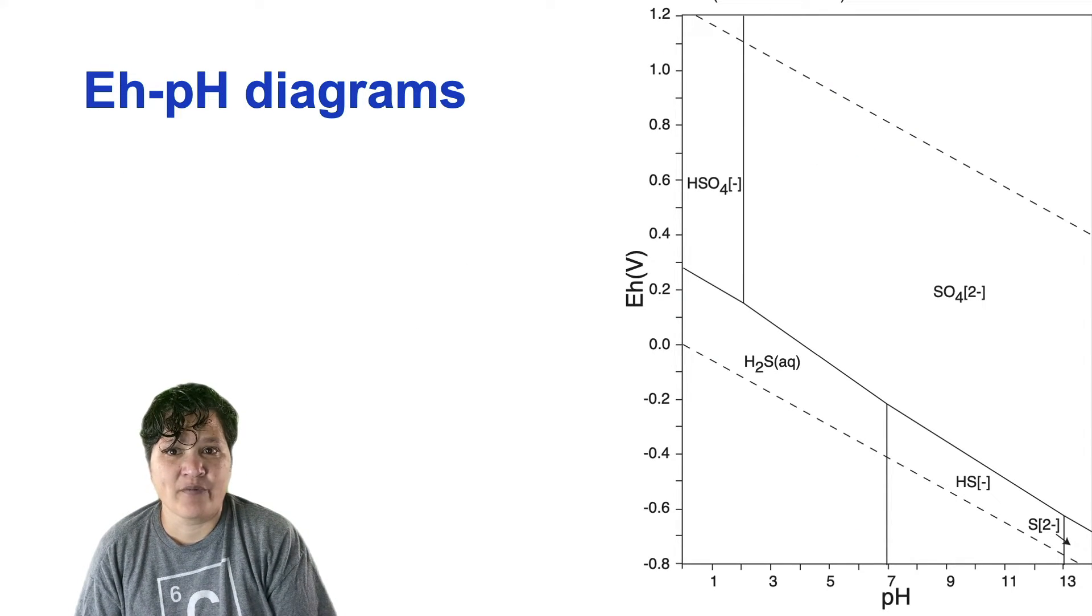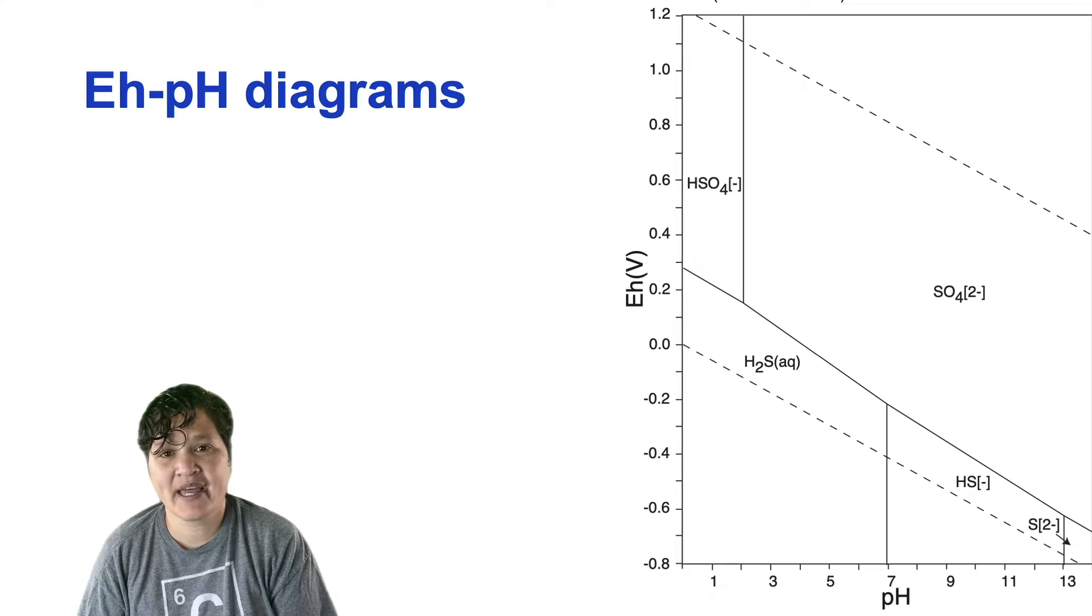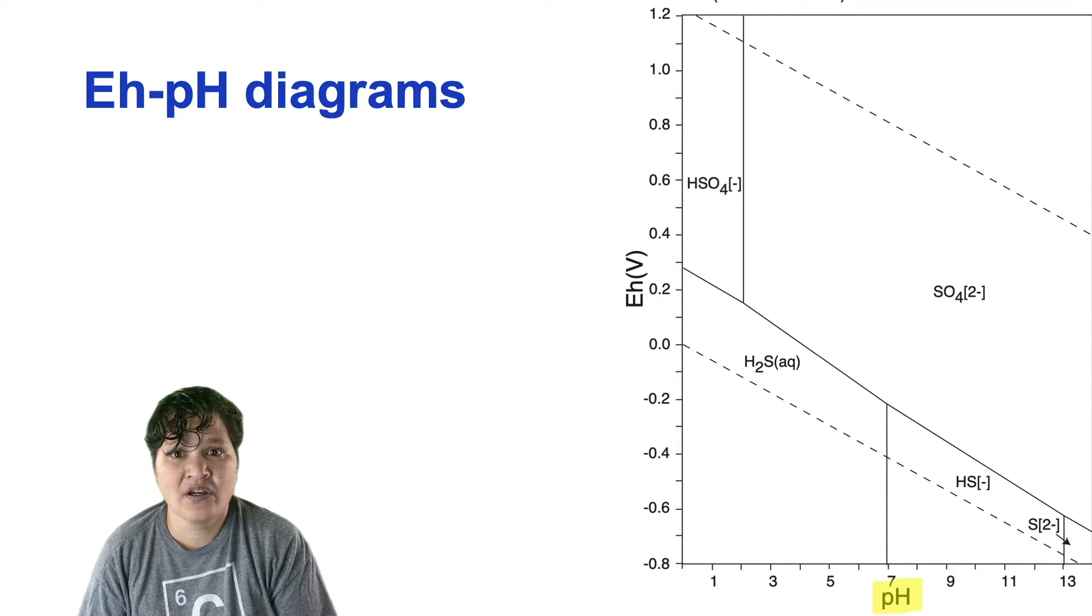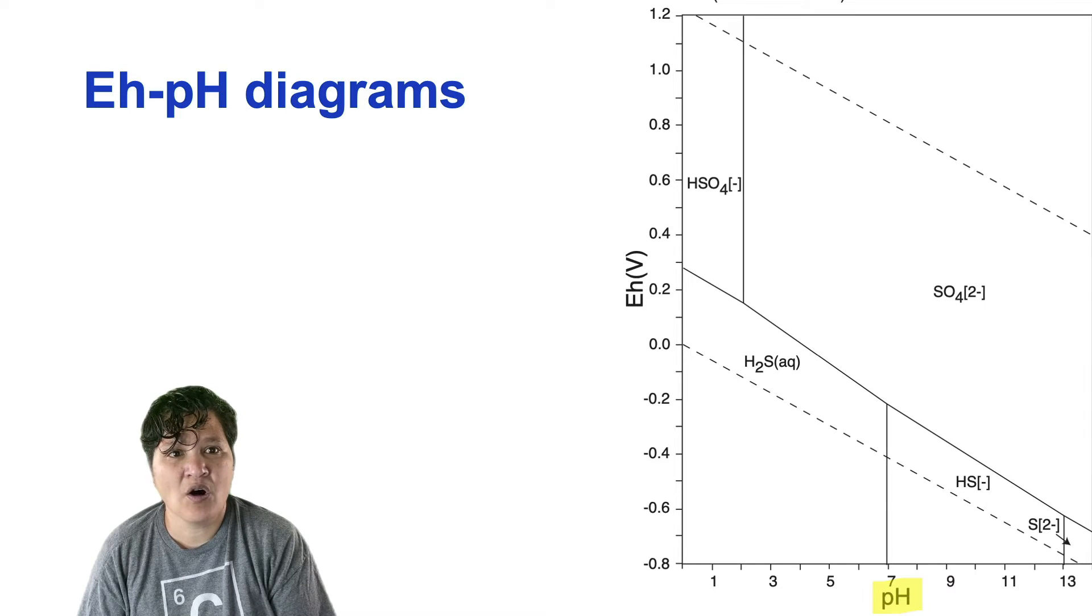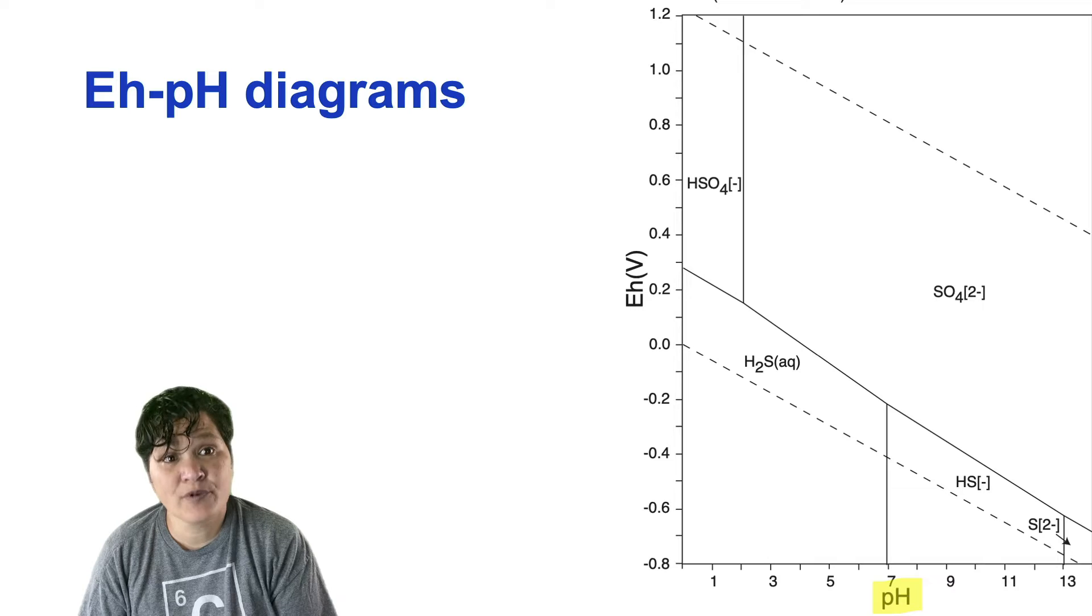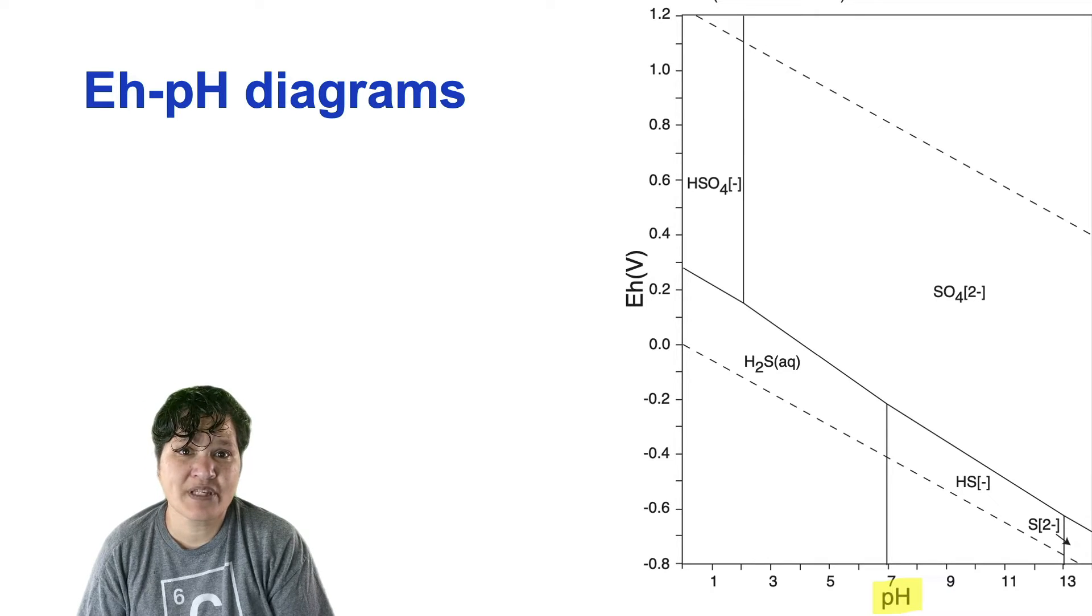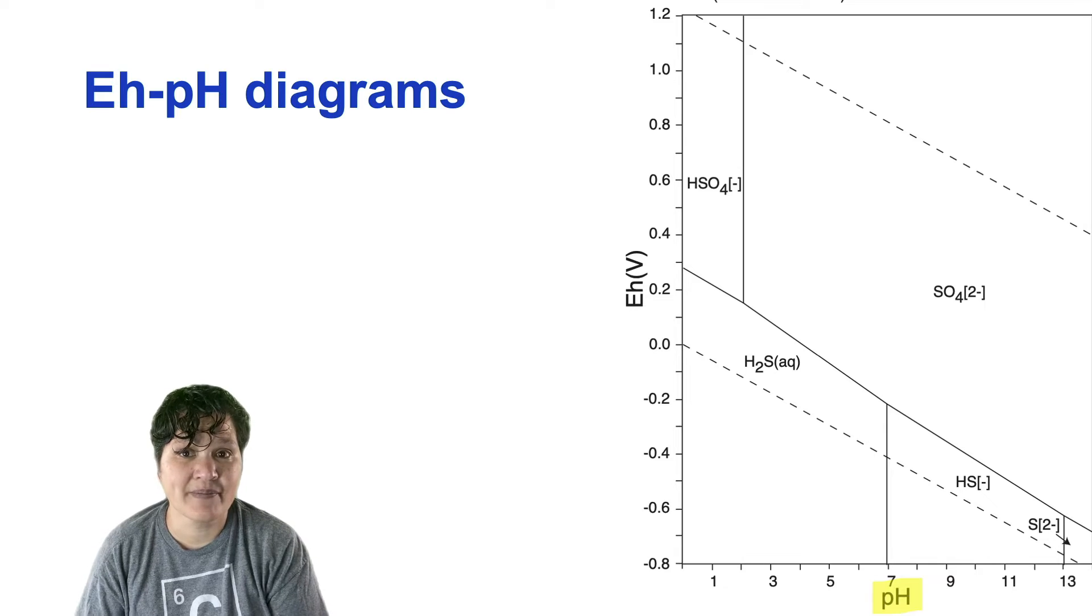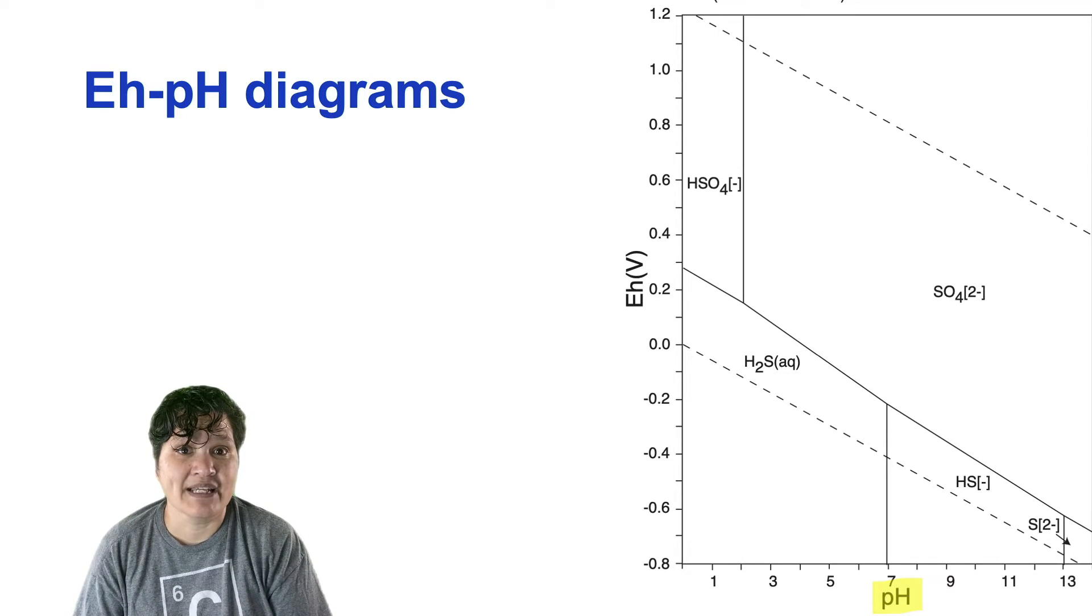Here's an EH-PH diagram for sulfur, which we're going to look at in more detail later. But for now, I want you to notice a few things. First of all, the x-axis on all EH-PH diagrams is PH. You should be pretty familiar with what PH represents, but perhaps you haven't thought about how PH affects the speciation of elements. We'll get around to why that is later.